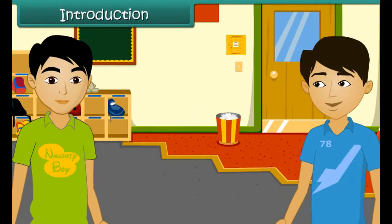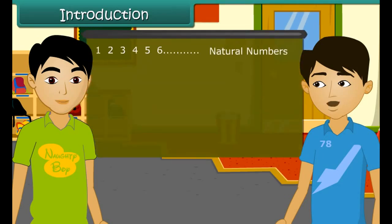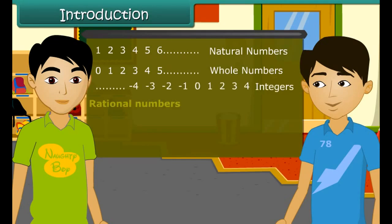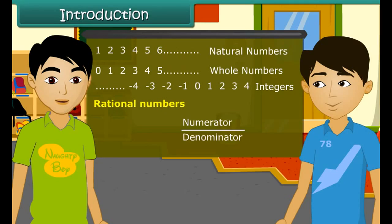Amit, what are you doing? Hey Rahul, come. You know, today our maths teacher taught us a new topic — rational numbers. I know about natural numbers, whole numbers, and integers, but what are rational numbers? These numbers are in the form numerator by denominator, where the numerator is either 0 or a positive integer, and the denominator is a positive integer. I did not understand. Come, I will explain you.